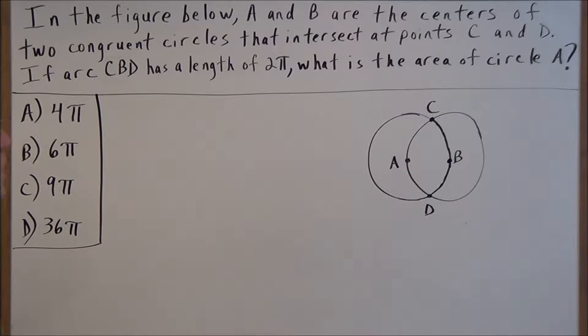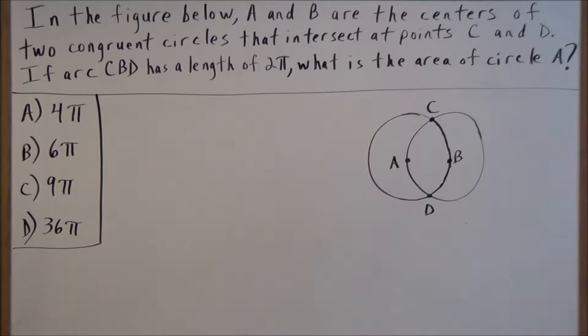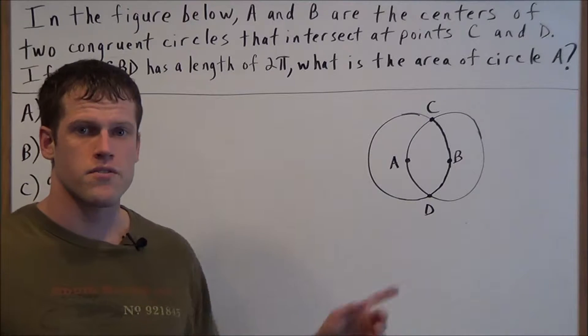In the figure below, A and B are the centers of two congruent circles that intersect at points C and D. If arc CBD has a length of 2π, what is the area of circle A?